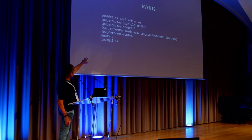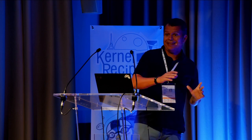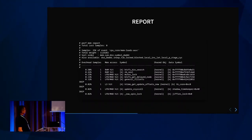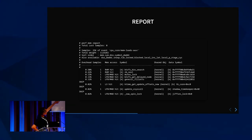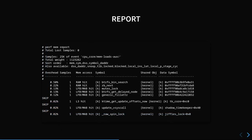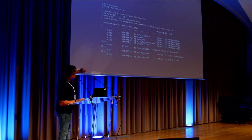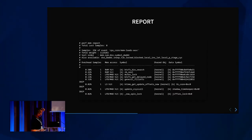Then you do 'perf mem report'. The default sort order is memory, symbol, DSO, and the data address symbol. It can't resolve everything — we are making it resolve more and more. But you can see information that was not available before: you see 'gfs lock', 'shadow_timekeeper', and then the kind of memory access — whether it went to memory or to the line fill buffer, from L1 to the rest of the cache hierarchy.